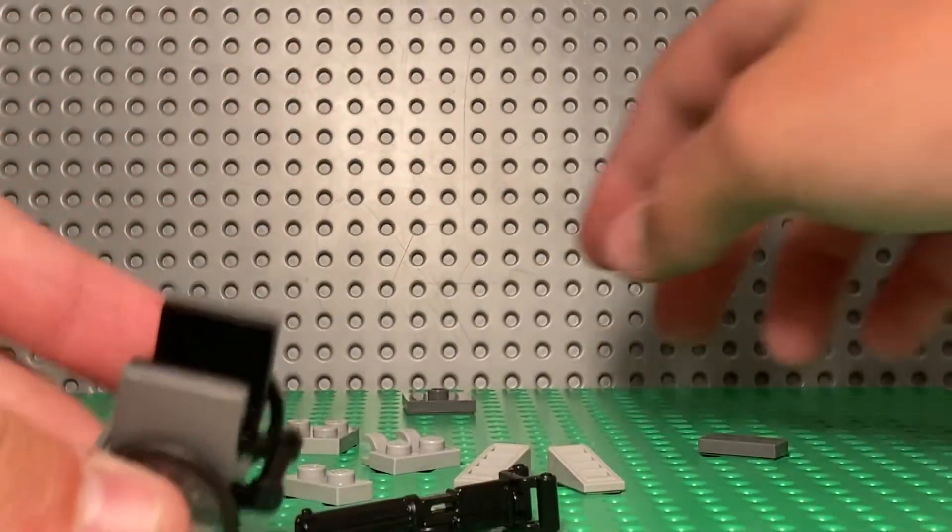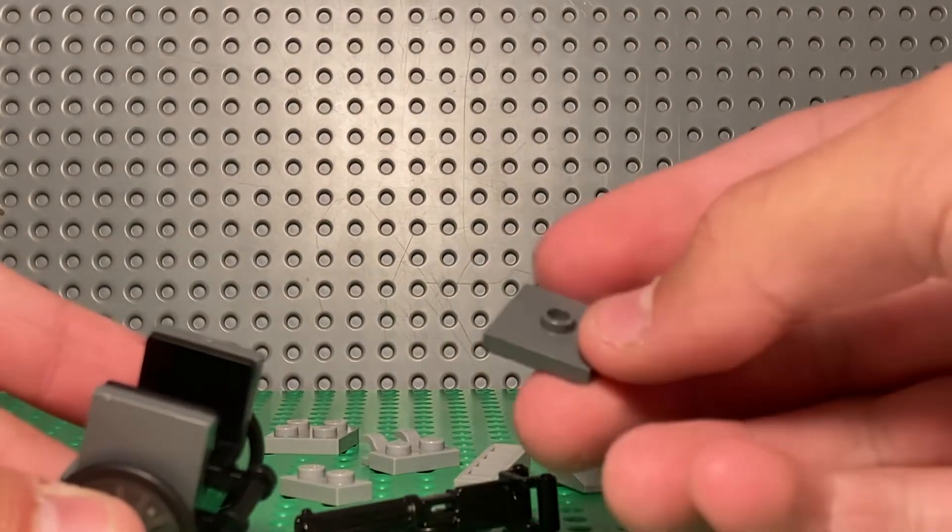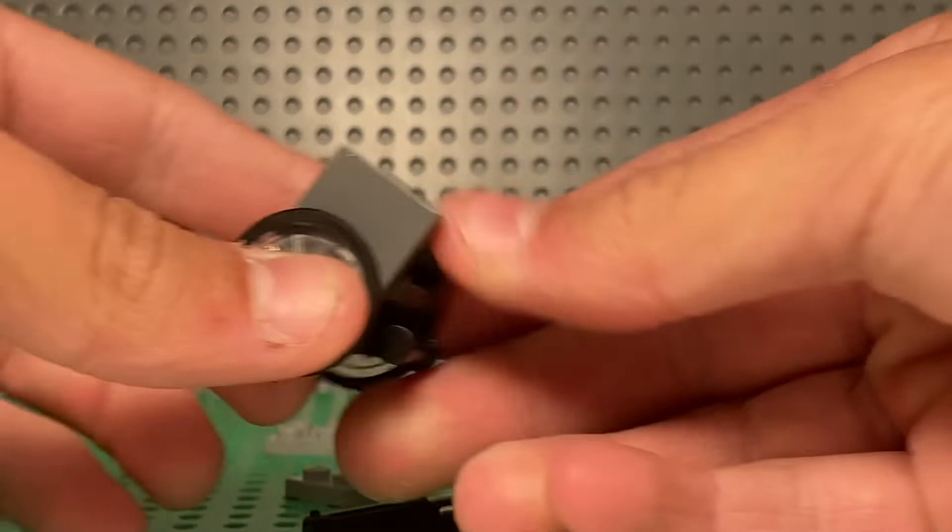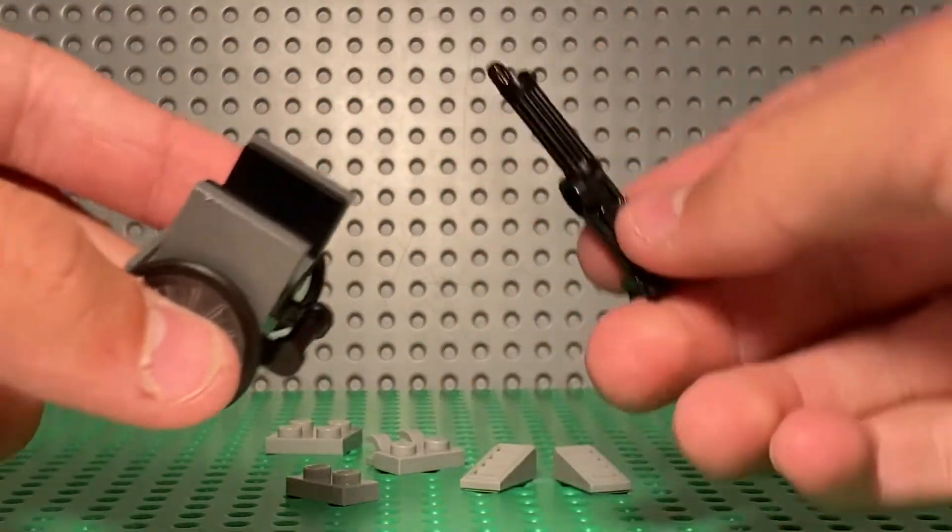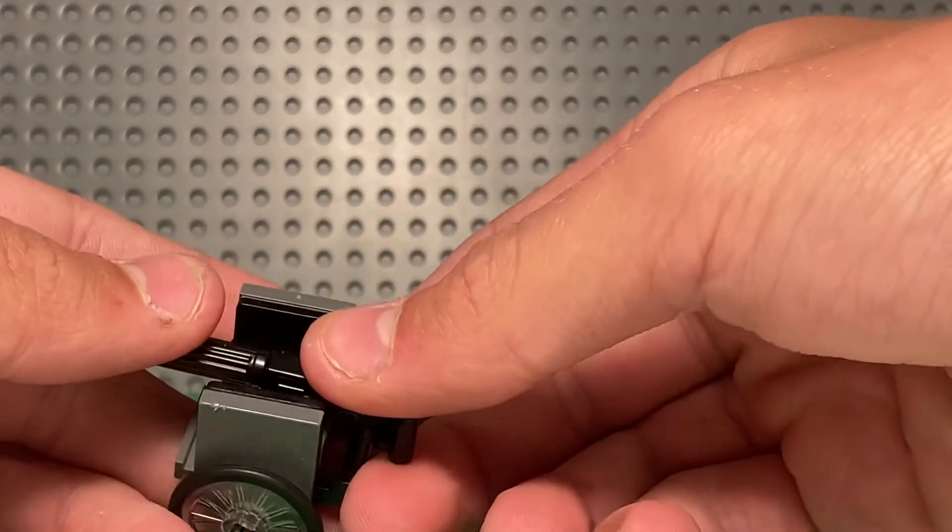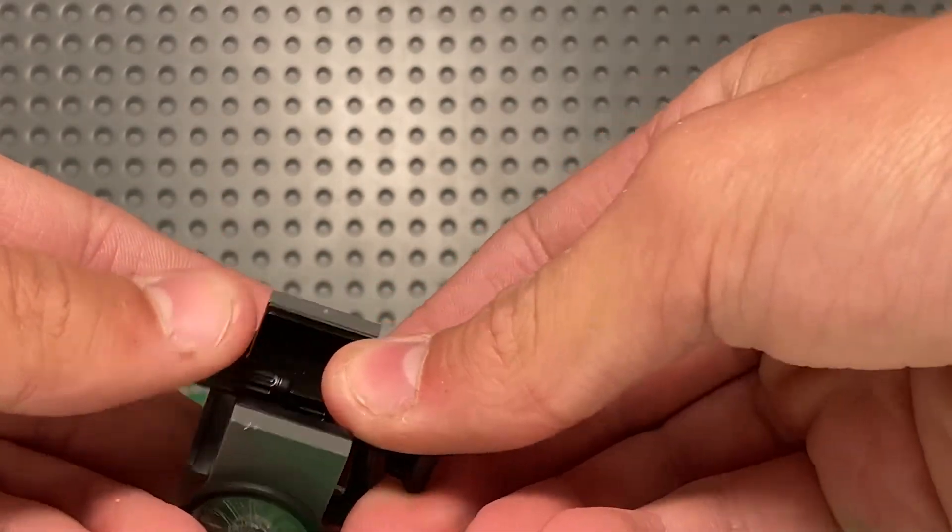Then get this one with a stud adapter. Put it right in the middle. Put your Vickers Air, which is $1 on Brickmania. It's a really good deal. Put that in the middle of there.